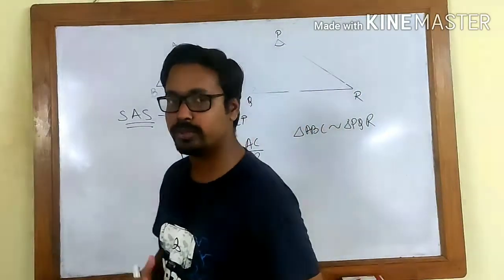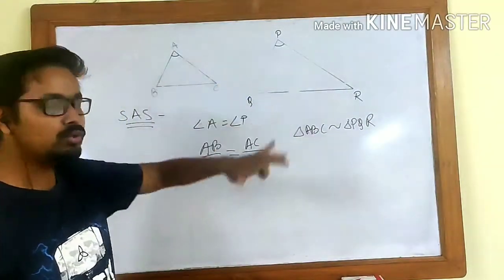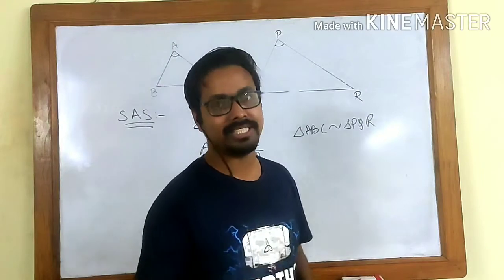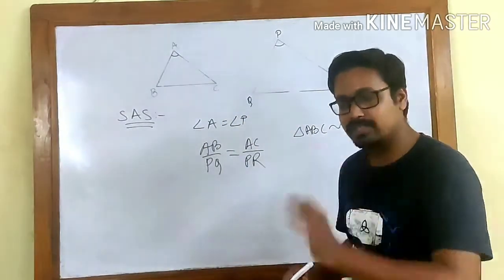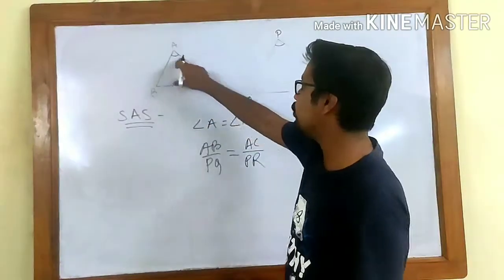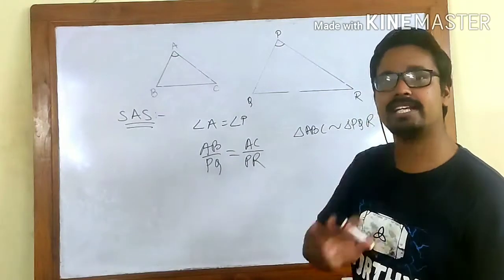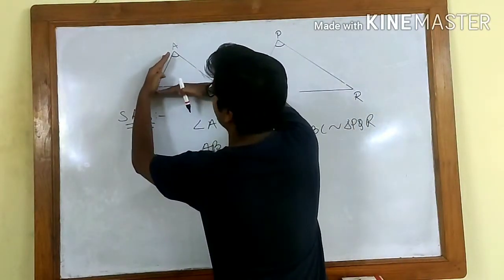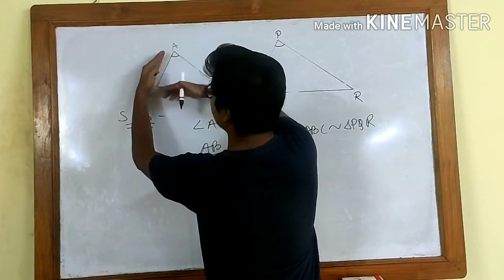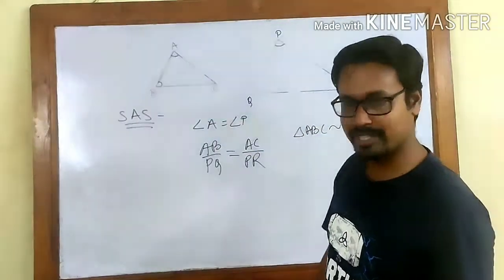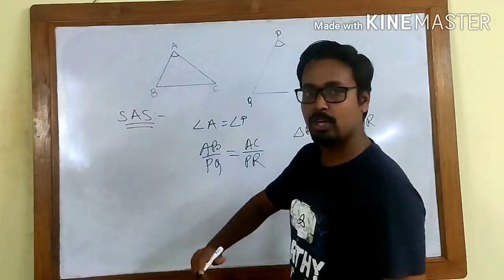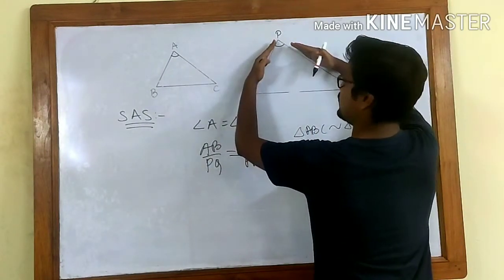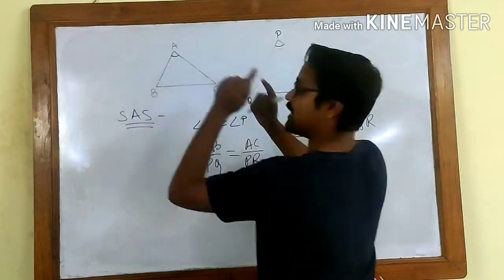The general mistake that most students make here is they think that if we show any two sides in proportion and take any angle equal, then we can prove similarity. But that is the mistake we should avoid. Whatever angle we find equal — suppose A equals P — the sides must be the ones containing that angle. You cannot take AB and BC from here and PQ and QR from there, because AB and BC make angle B, not angle A. Our angle of choice is angle A, which contains AB and AC, and angle P contains PQ and PR.